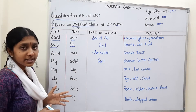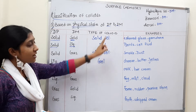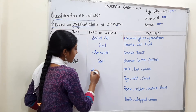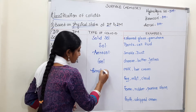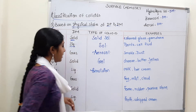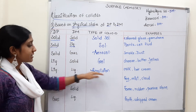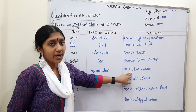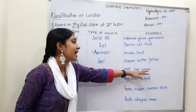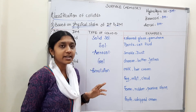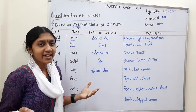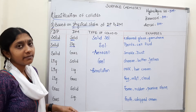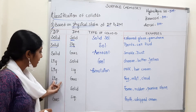Fifth type: liquid is the dispersed phase and liquid is the dispersion medium. The type of colloid is called Emulsion.